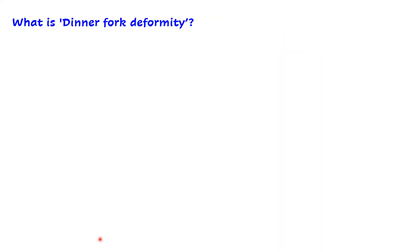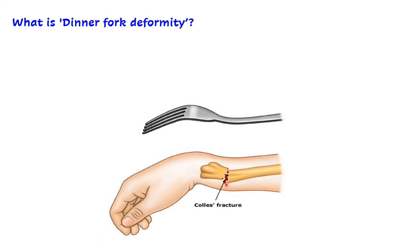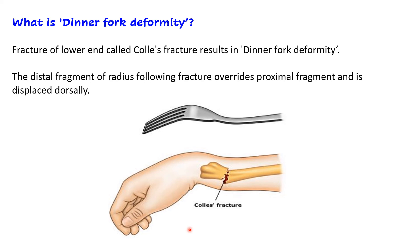What is dinner fork deformity? When the radius fractures at the junction of the distal one-fourth and upper three-fourths — known as Colles' fracture — the bone resembles a dinner fork. This occurs when a person falls on an outstretched hand, transmitting pressure to the radius since it participates in the wrist joint while the ulna does not. After the fracture, the distal fragment is pulled dorsally and overrides the proximal end due to the pull of the extensor muscles, producing the dinner fork deformity.